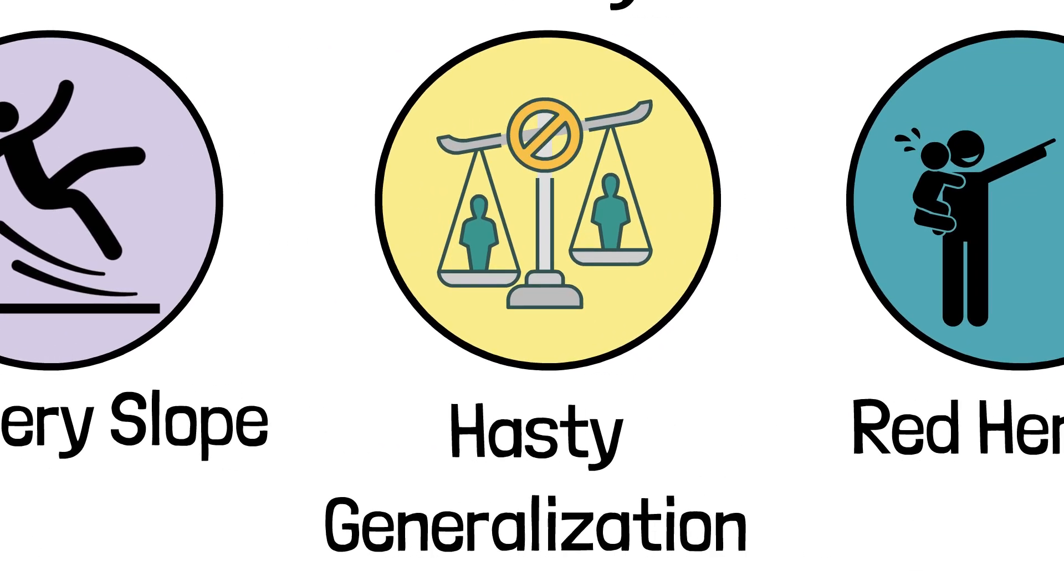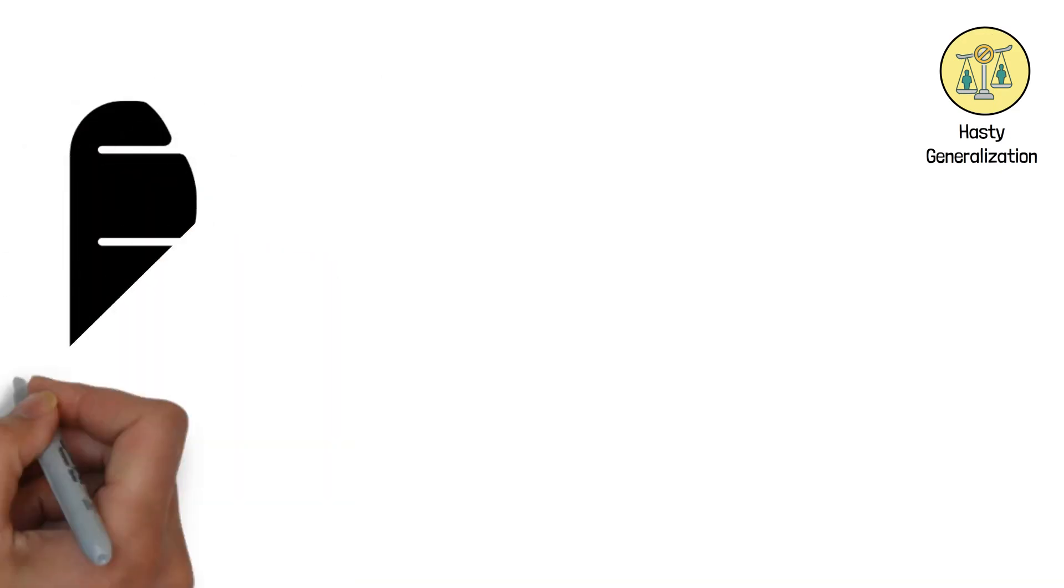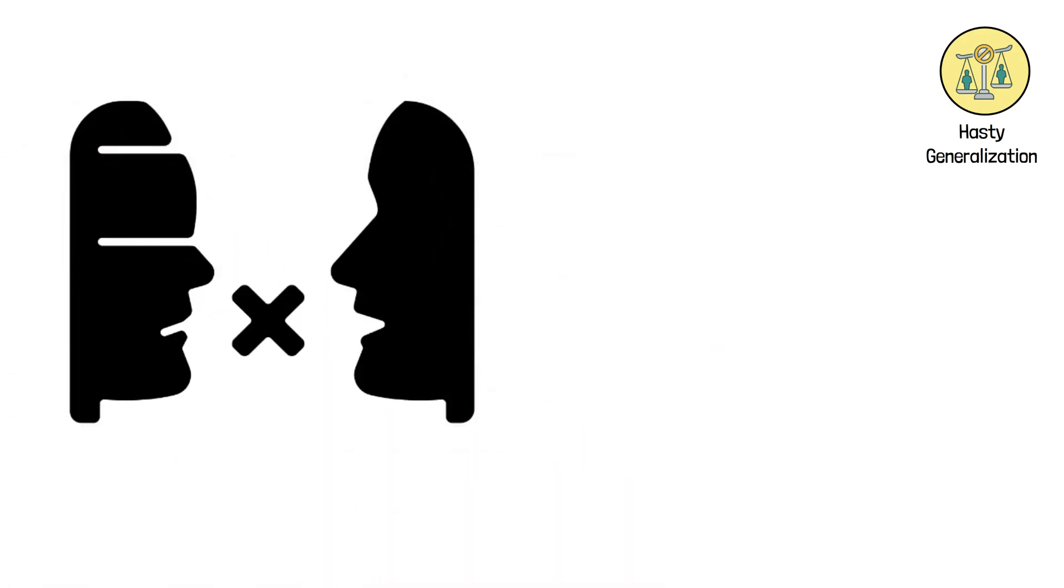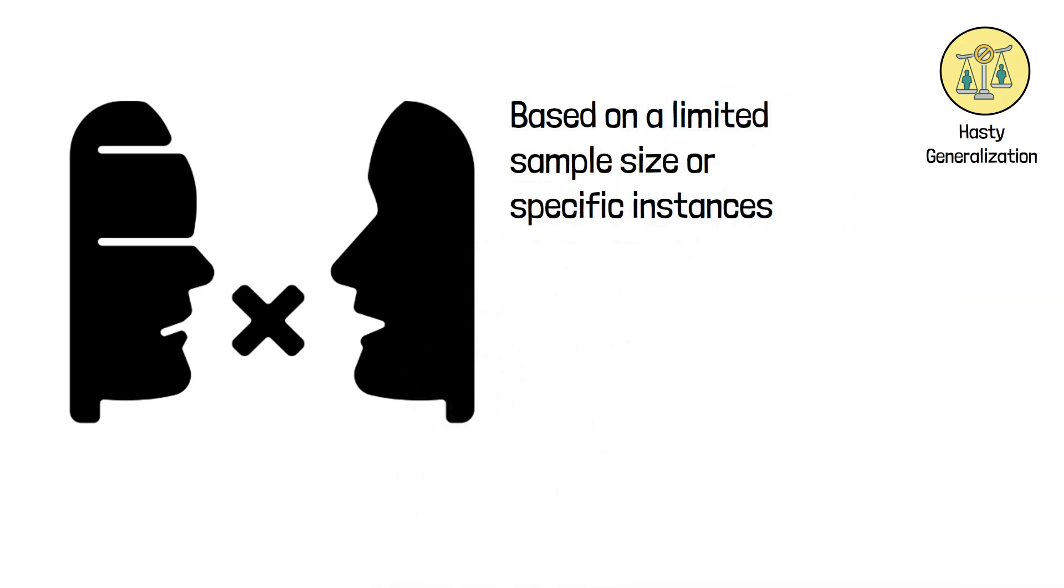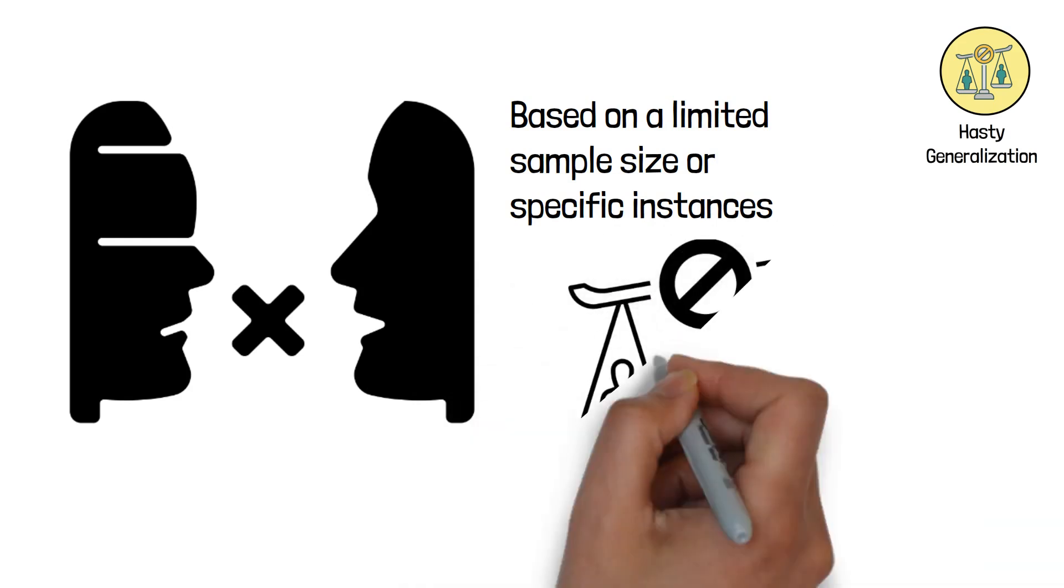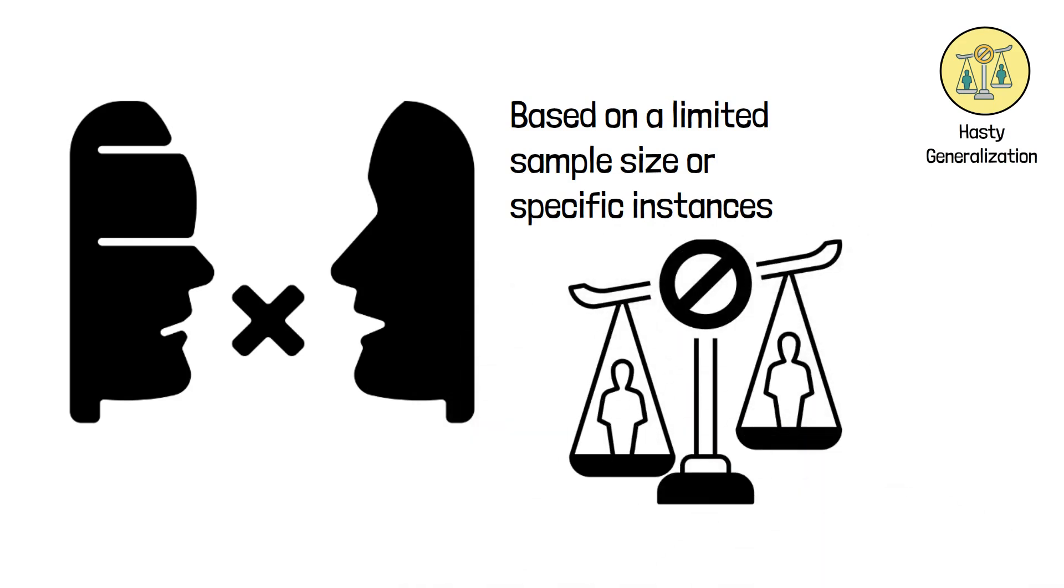8. Hasty Generalization. This fallacy occurs when a conclusion is drawn based on insufficient or biased evidence. It involves making a broad generalization about a group or situation based on a limited sample size or specific instances. Hasty generalizations ignore the diversity and complexity of the subject, leading to inaccurate or unfair conclusions.